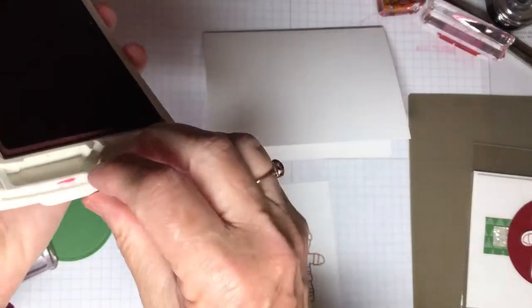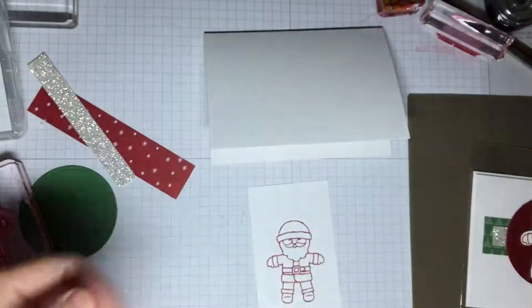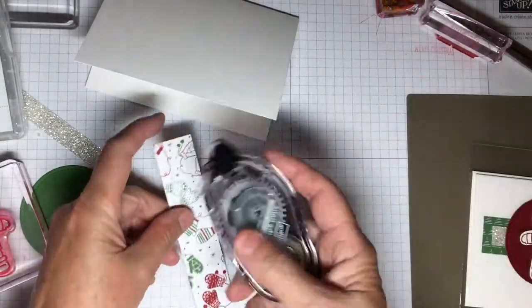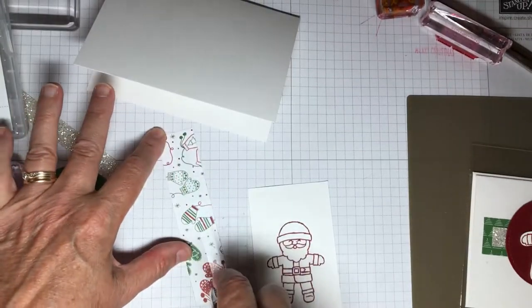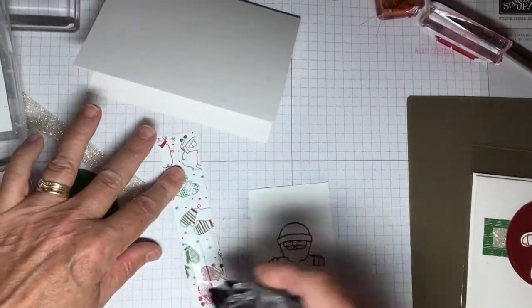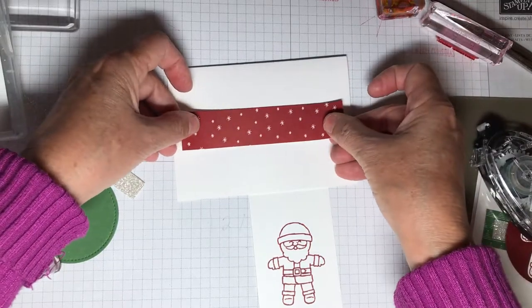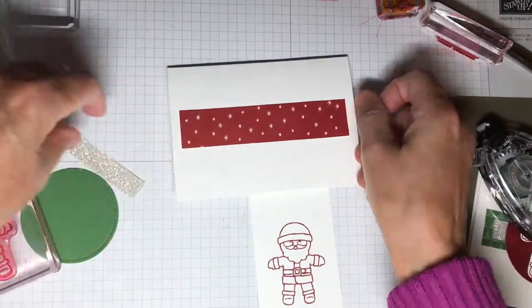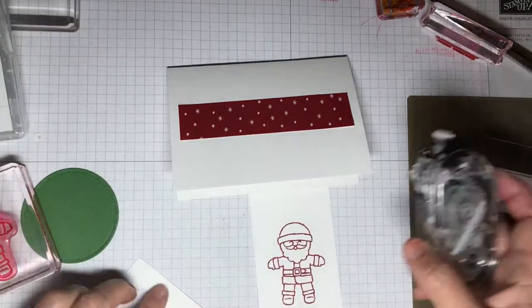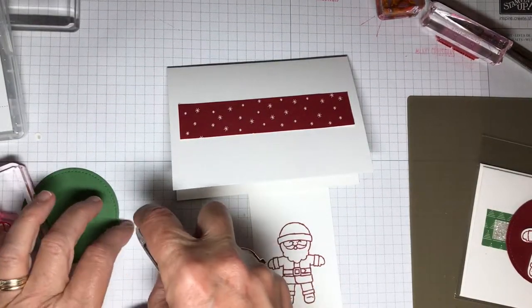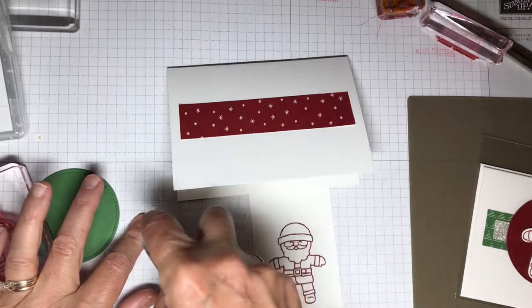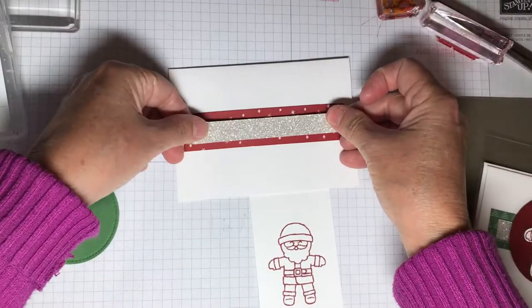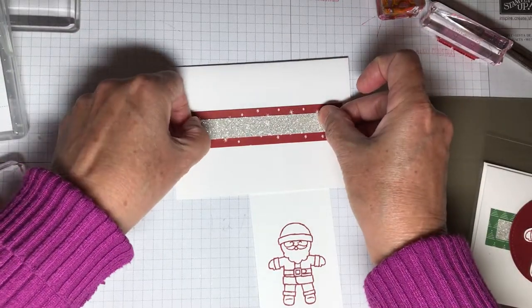We're going to let that dry a minute while we adhere the designer series paper. So I'll just use some snail adhesive here. That looks good. Then some of the sparkly paper. I'll have the item numbers on my blog for all the supplies here, and you can order them in my shop.